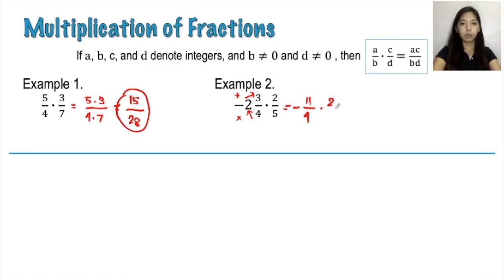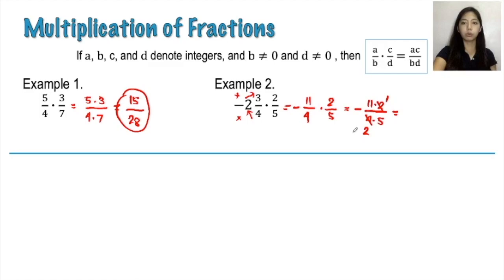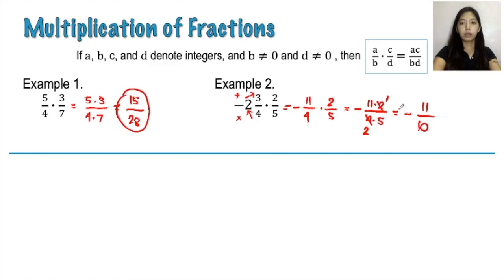And then we copy the next fraction: times 2 over 5. Now we multiply the numerator by the numerator, but don't forget this will already give you a negative fraction. So that would be 11 times 2 in the numerator over 4 times 5 in the denominator. Before multiplying, check first if you can actually simplify certain numbers in the given expression. And in here, you can actually simplify the 2 and the 4: 2 would now become 1, and 4 would now become 2. This process will help you deal with smaller numbers in your solution. So to continue, this is negative. The numerator would now be 11 times 1, which is 11. And the denominator, 2 times 5, will give us 10. Upon checking the given fraction, negative 11 over 10, it is already in its lowest term. So this is now the final answer: negative 11 over 10.